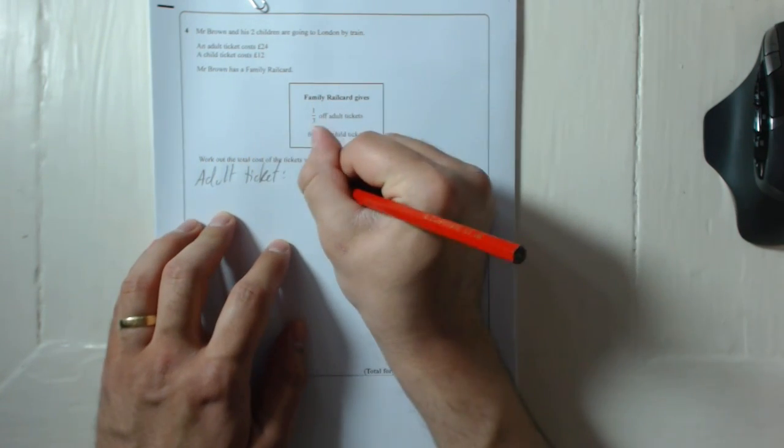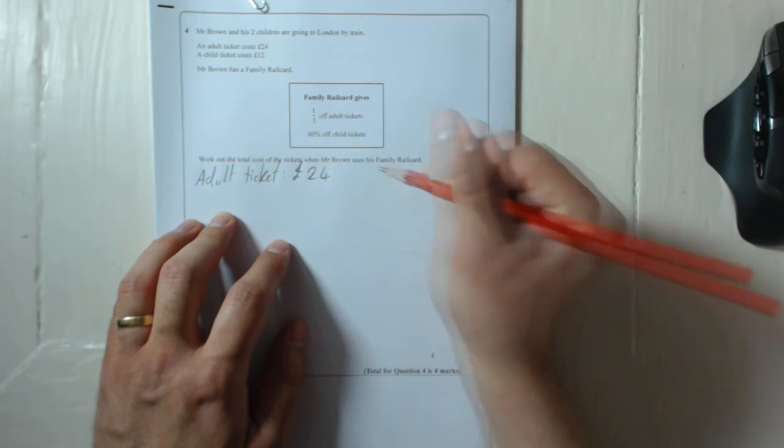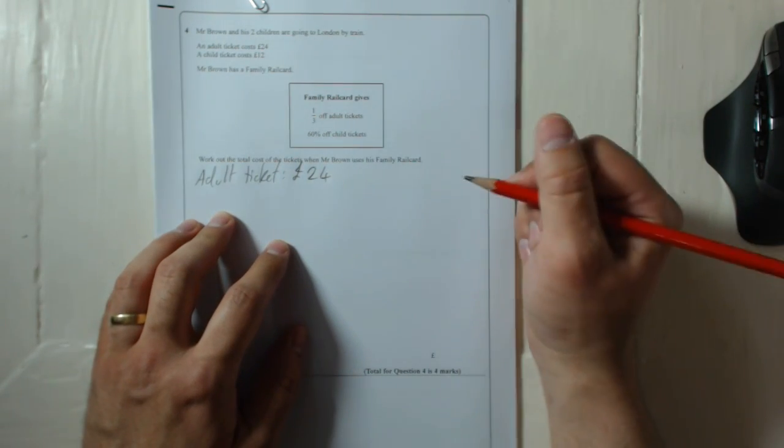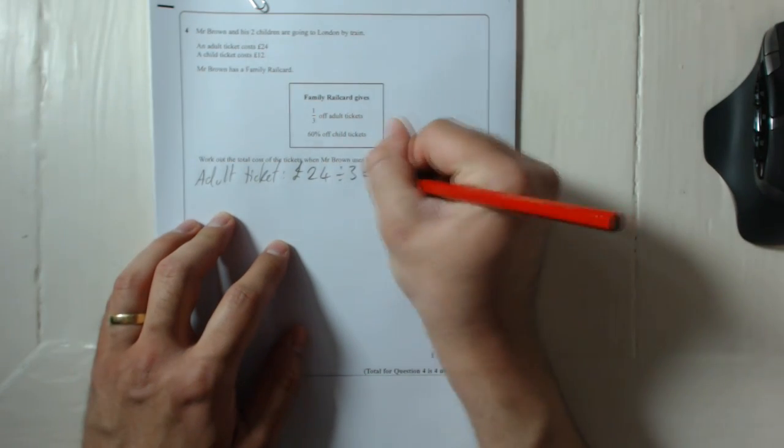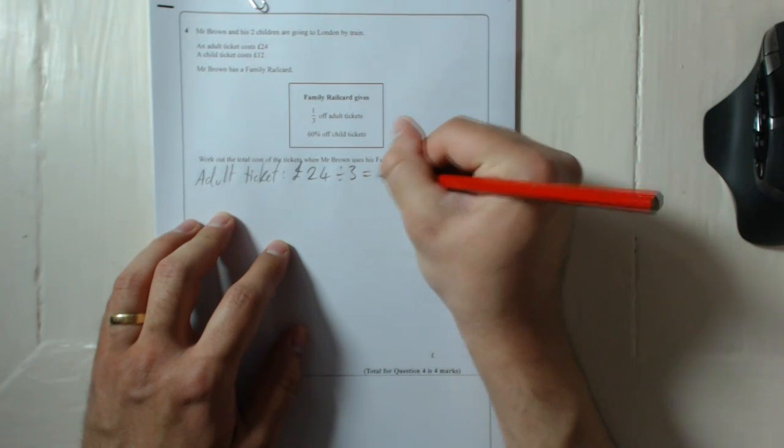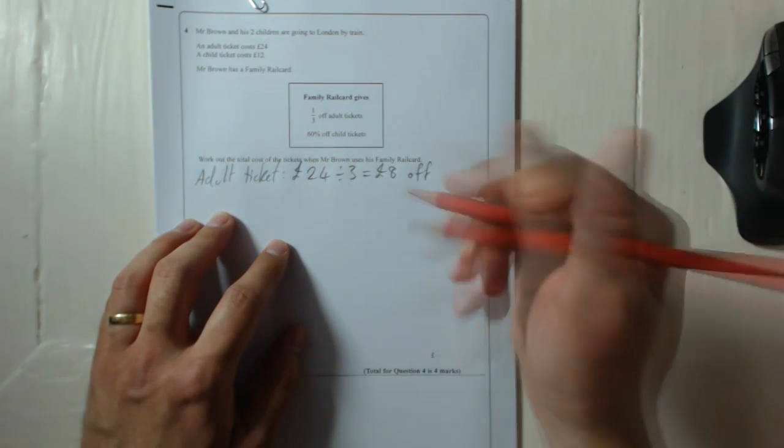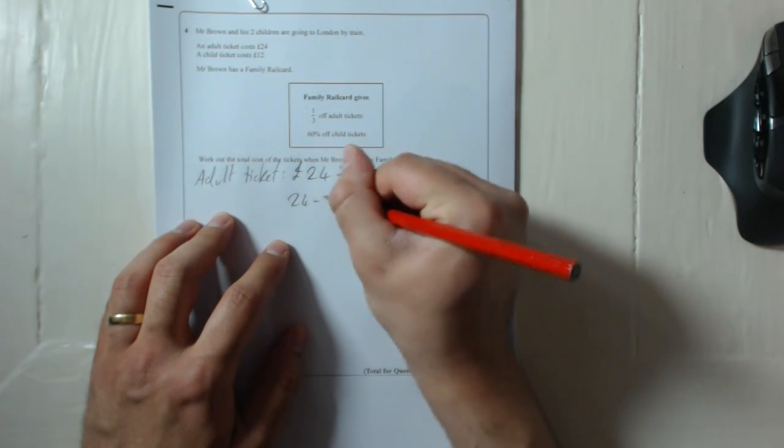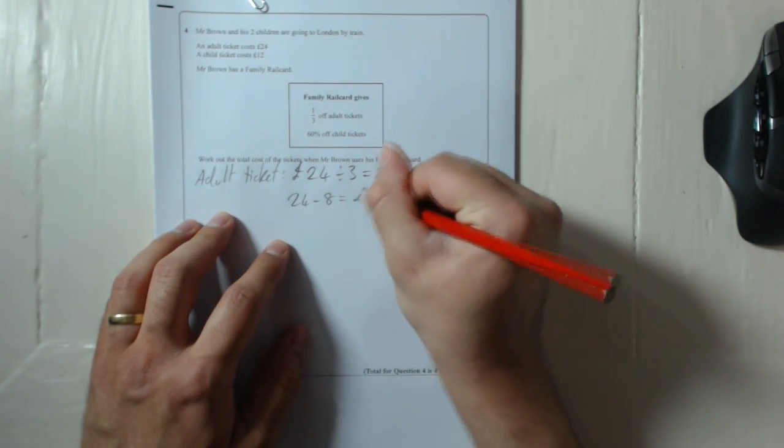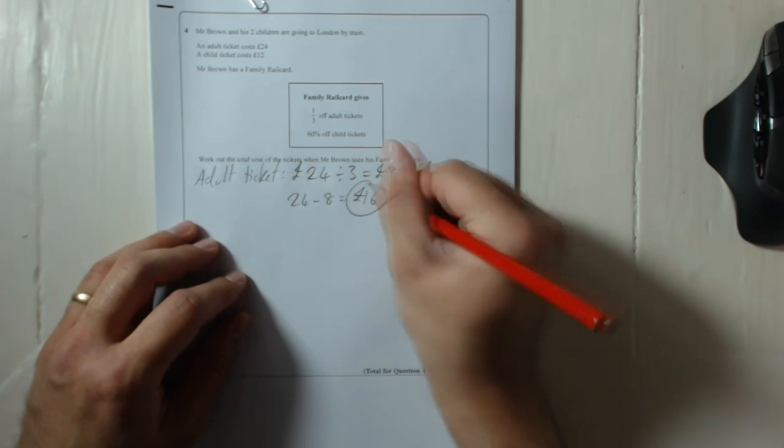That is £24, but it's a third off. So if I divide that by three, that is £8 off. So 24 take away 8 equals £16.